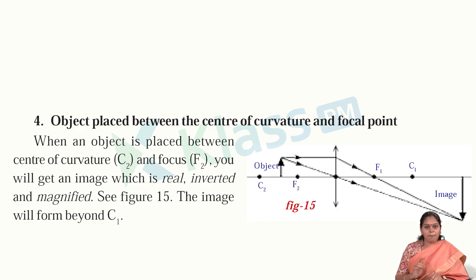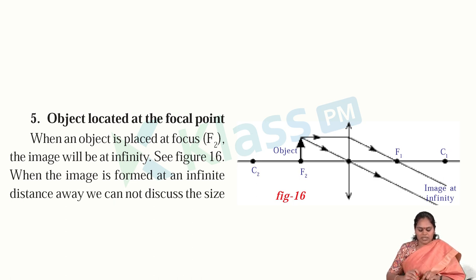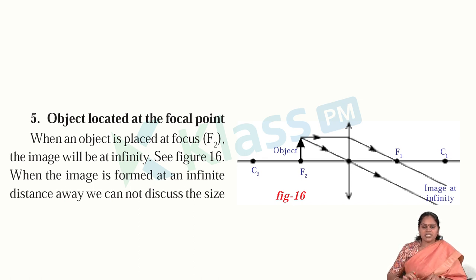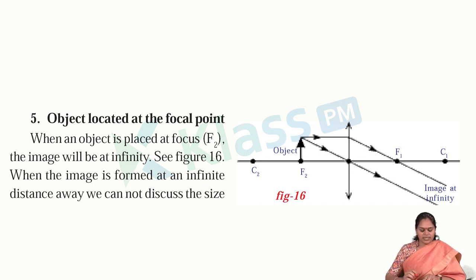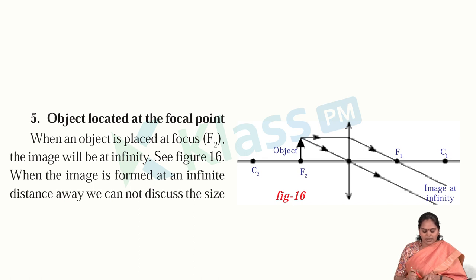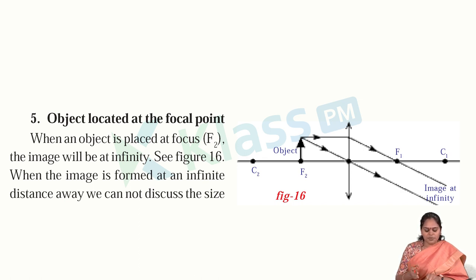Situation 5: object located at the focal point. When an object is placed at the focal point, the image will be at infinity — the rays are not intersecting anywhere. When the image is formed at infinite distance away, we cannot discuss the size and nature of the image. So when we keep an object at the focal point, the image forms at infinite distance and cannot be observed.